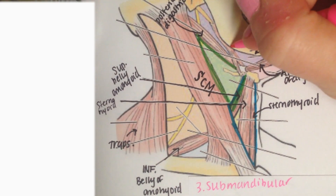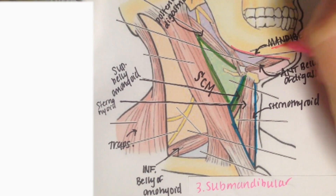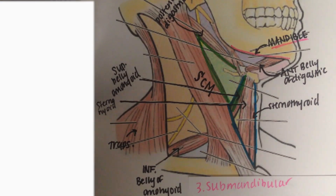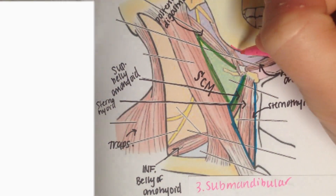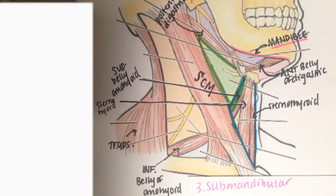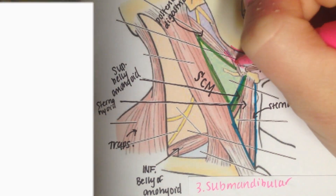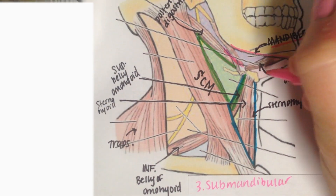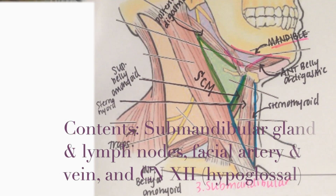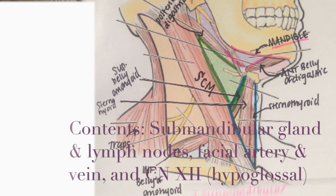Now we have our submandibular triangle. Our first border is going to be the mandible as the superior border, and then we're also going to have borders of both the posterior and the anterior belly of our digastric muscles. In this triangle, we have our submandibular glands and lymph nodes, our facial artery and vein, and cranial nerve 12.